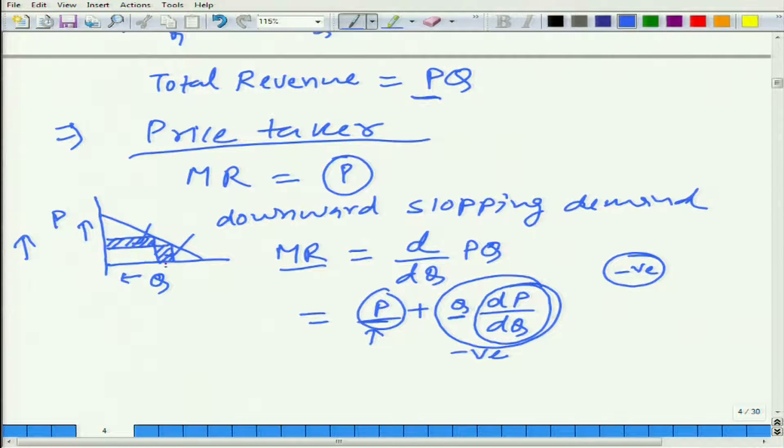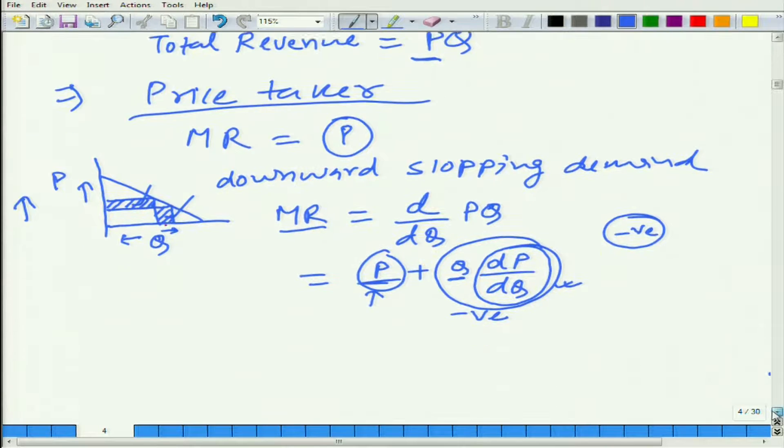Here, because we have increased Q, this firm is able to earn more at the new price, but at the same time the firm is losing revenue from each of the goods, and that is captured by this term. We can rewrite it, we can take P out. What will we get? P times (1 + Q/P × dP/dQ). Does this look familiar?